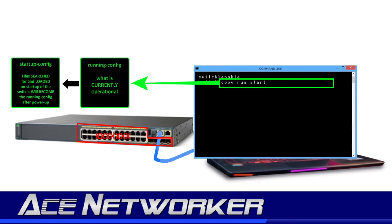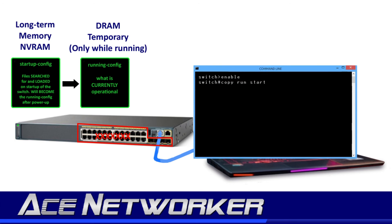Since the startup configuration is now the same as the running configuration was before it lost power and restarted, those configuration changes will remain the same. Once it loads the startup configuration on power up, it will not load the setup wizard because it found a startup file. That startup configuration then becomes the running configuration, although the startup config file still remains until it is changed. So any additional reboots or power losses won't change the configuration this switch has and uses.